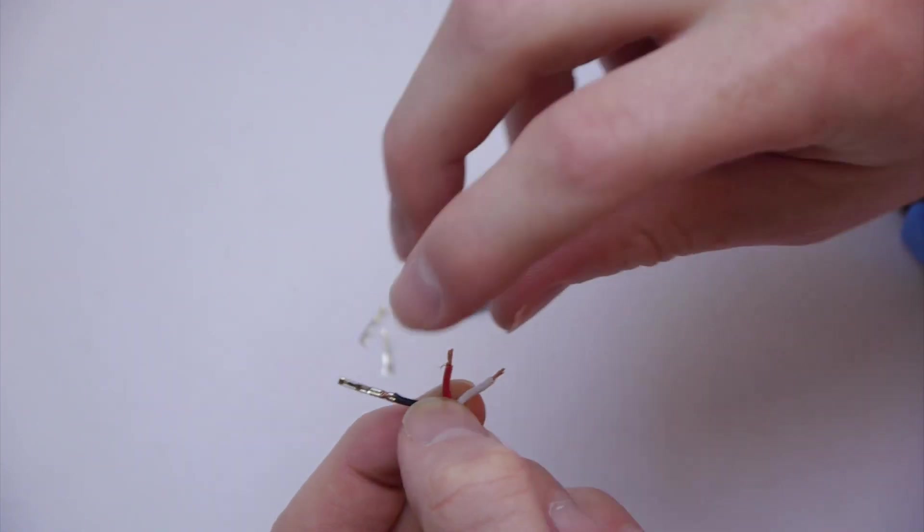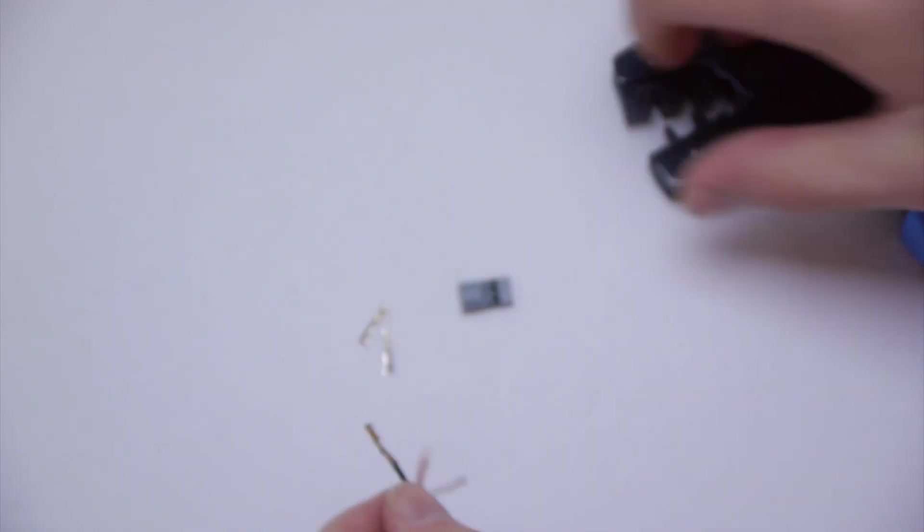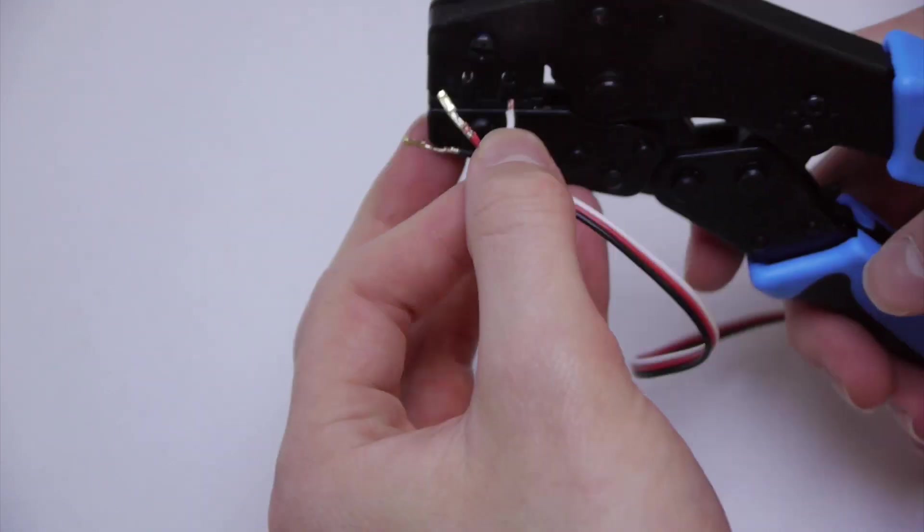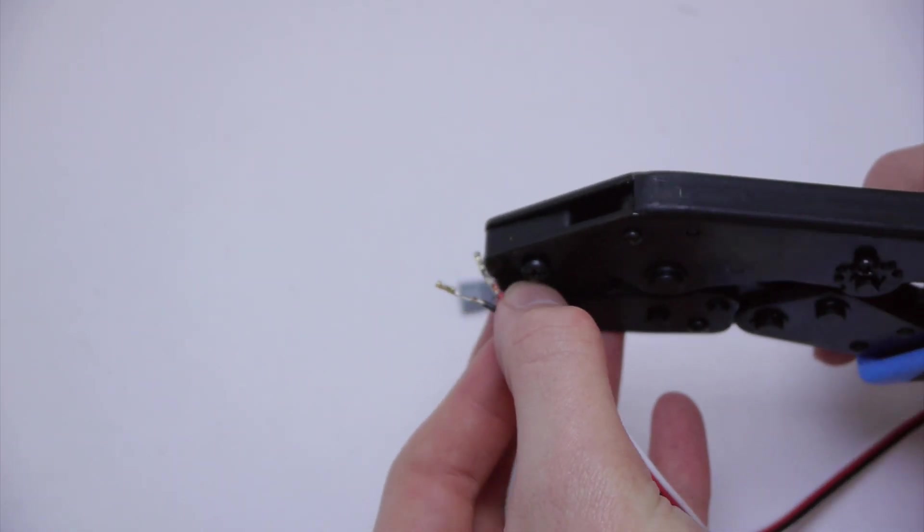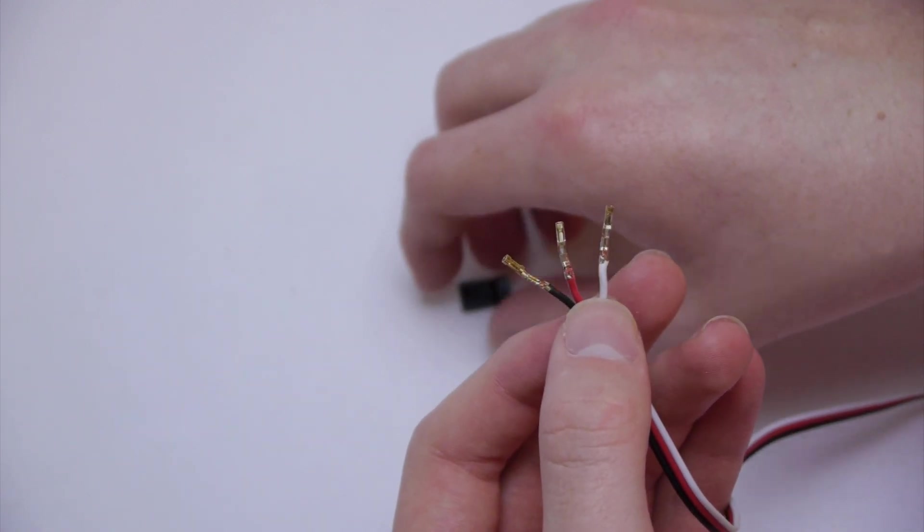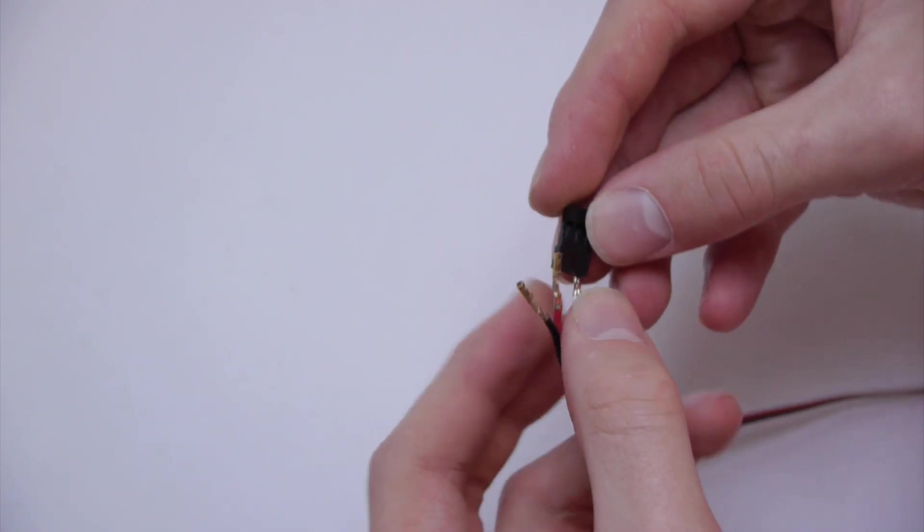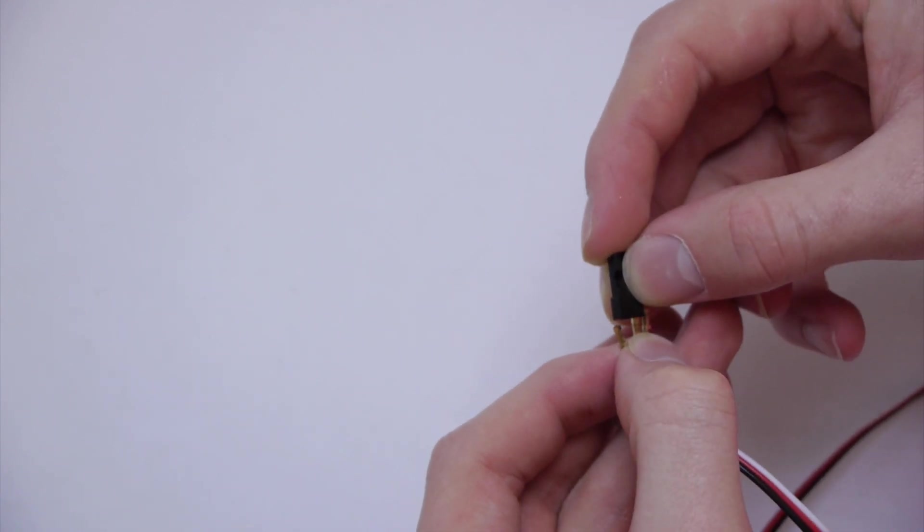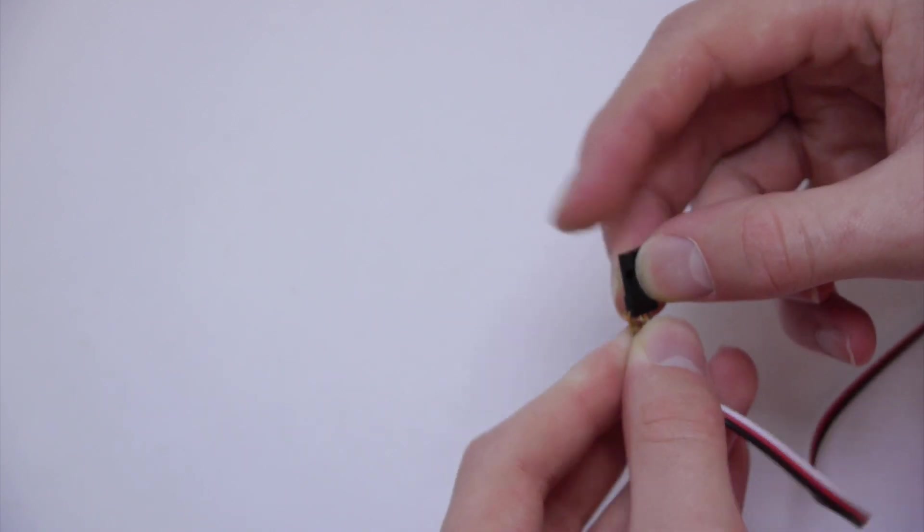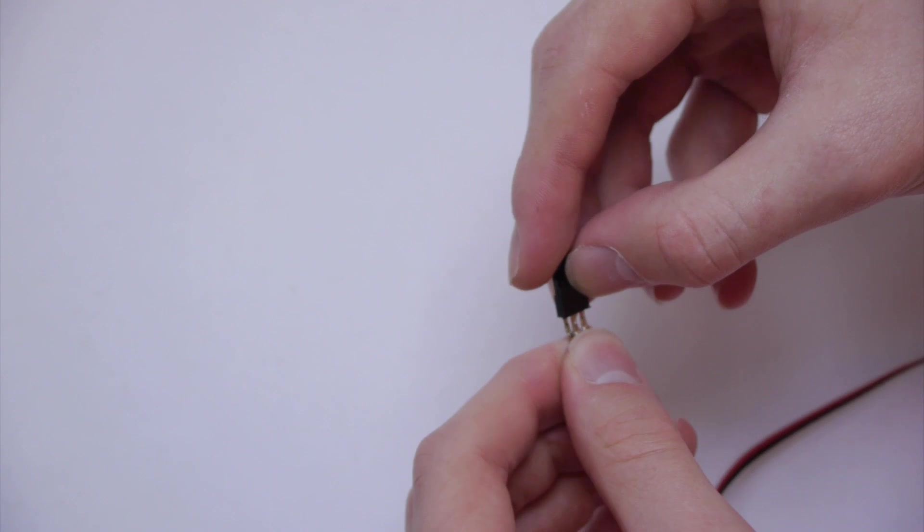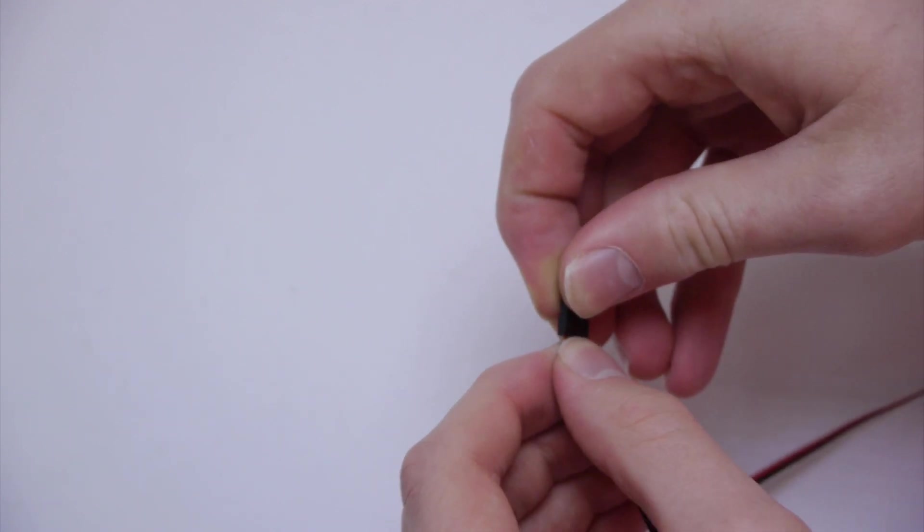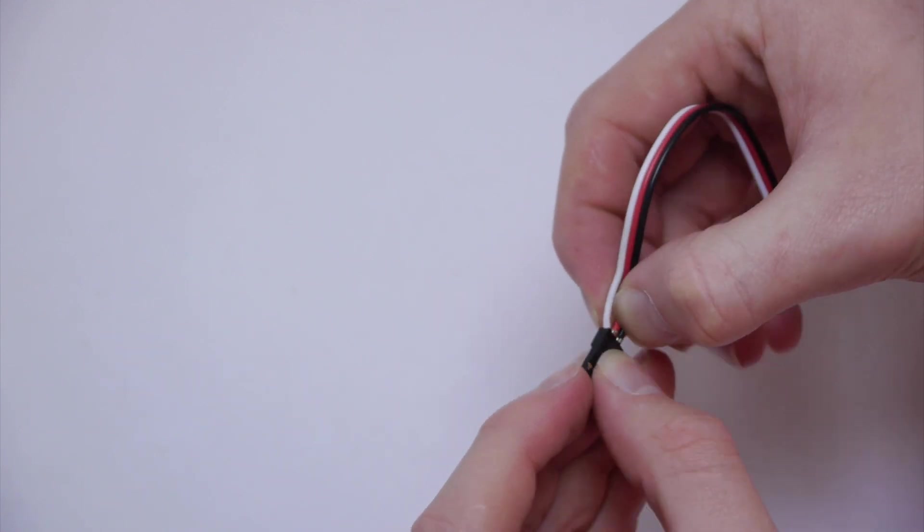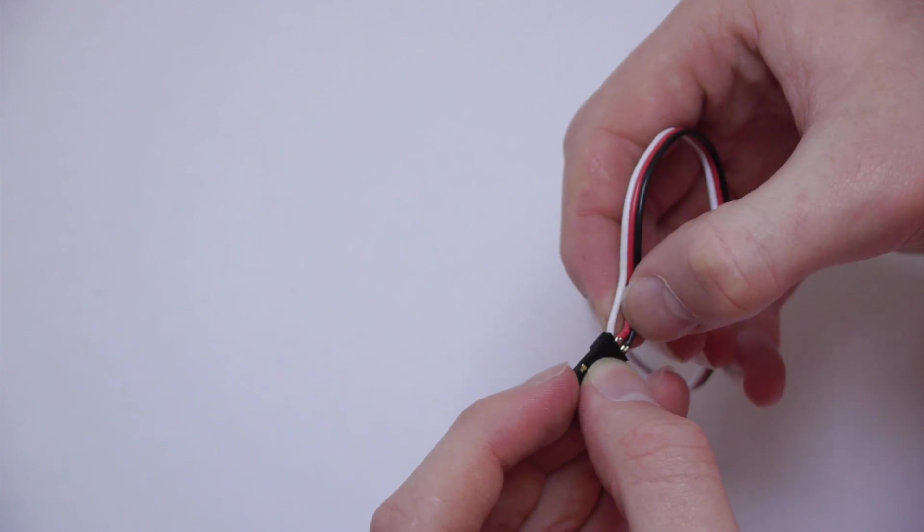And before you do each of your next ones, make sure there aren't any little straggler wires. So now just put the wires in here like this. It takes a little bit of force to push it in. Just push each of the wires in like so.